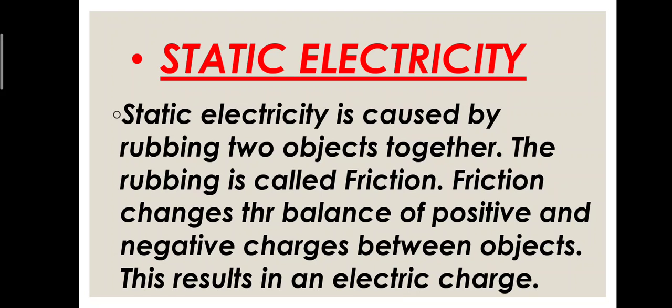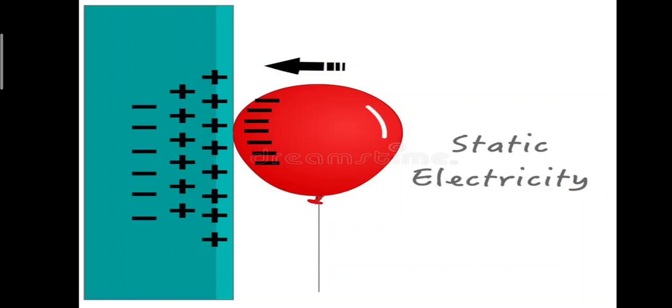Now let me explain the two examples of static electricity. This is the simple diagram of static electricity as shown on your slide. There is a balloon and a wall. The balloon contains negative charges and the wall contains positive charges. When the balloon and wall are rubbed against each other, the positive and negative charges are transferred, creating an imbalance between the charges, and static electricity is produced.